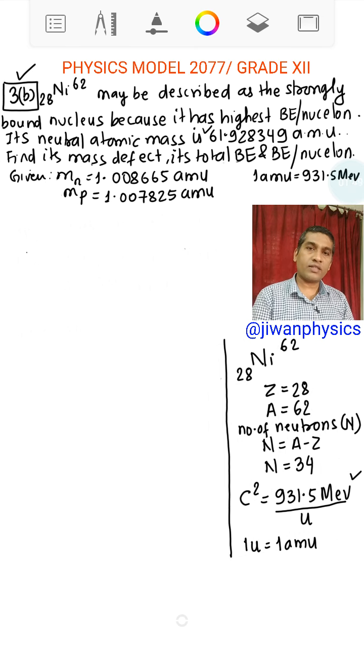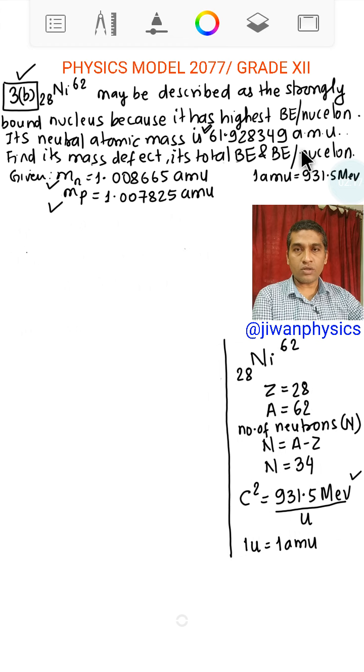This is a very important conversion factor and we use this in nuclear and atomic physics. We have mass of neutron, mass of proton, and mass of nucleus. We need to find mass defect, binding energy, that is total binding energy, and binding energy per nucleon.